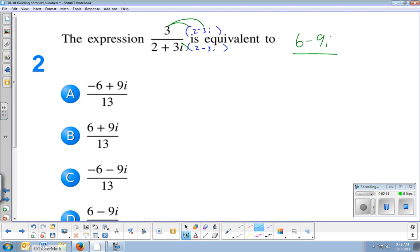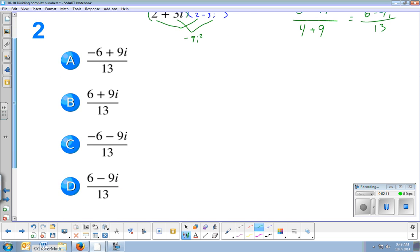The bottom is going to be FOIL distribution, but because they're conjugates, we have that shortcut where we can just do the first terms, 2 times 2 is 4, and the last terms, positive 3i times negative 3i. That would be negative 9i squared, but we know that's going to turn into plus 9 because of the i squared. And so that'll give us 6 minus 9i over 13. And that is our answer. It should be D.